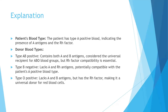The patient has type A positive blood, indicating the presence of A antigens and the Rh factor. Type AB positive contains both A and B antigens — considered the universal recipient for ABO blood groups — but Rh factor compatibility is also essential. Type B negative lacks A and Rh antigens, making it potentially compatible with the patient's A positive blood type. Type O positive lacks A and B antigens but has the Rh factor, making it the universal donor for red blood cells.